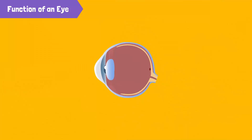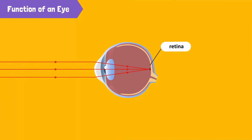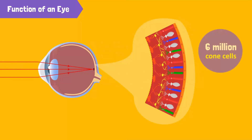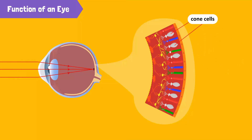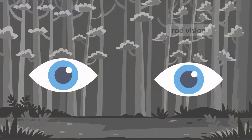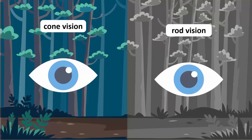The innermost layer at the back, inside of the eyeball, is known as the retina. Light rays converge on the retina to form images that our brain can understand. The retina is made up of millions of cells that are sensitive to light. The human retina has around 6 million cone cells, which allow us to see colors. The retina also has around 120 million rod cells, which allow us to see in dim light.